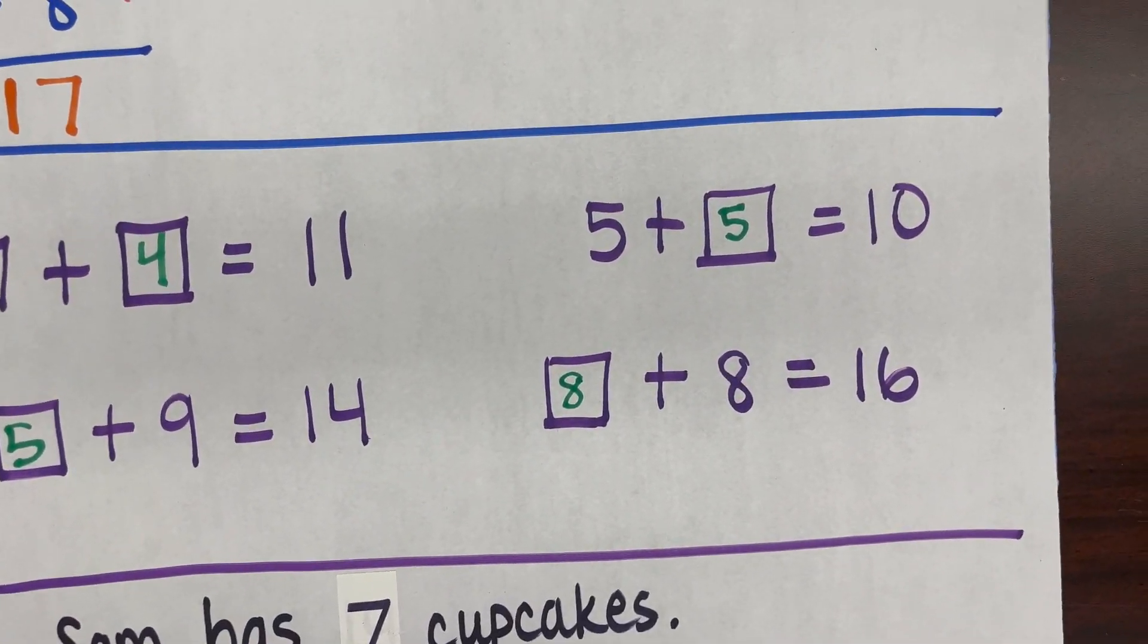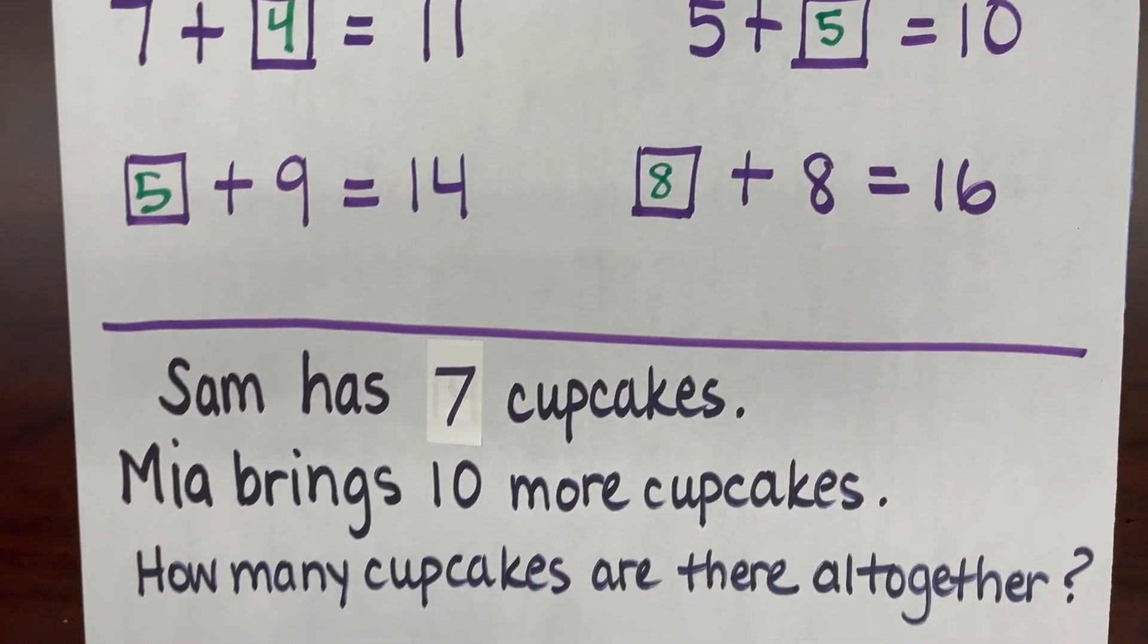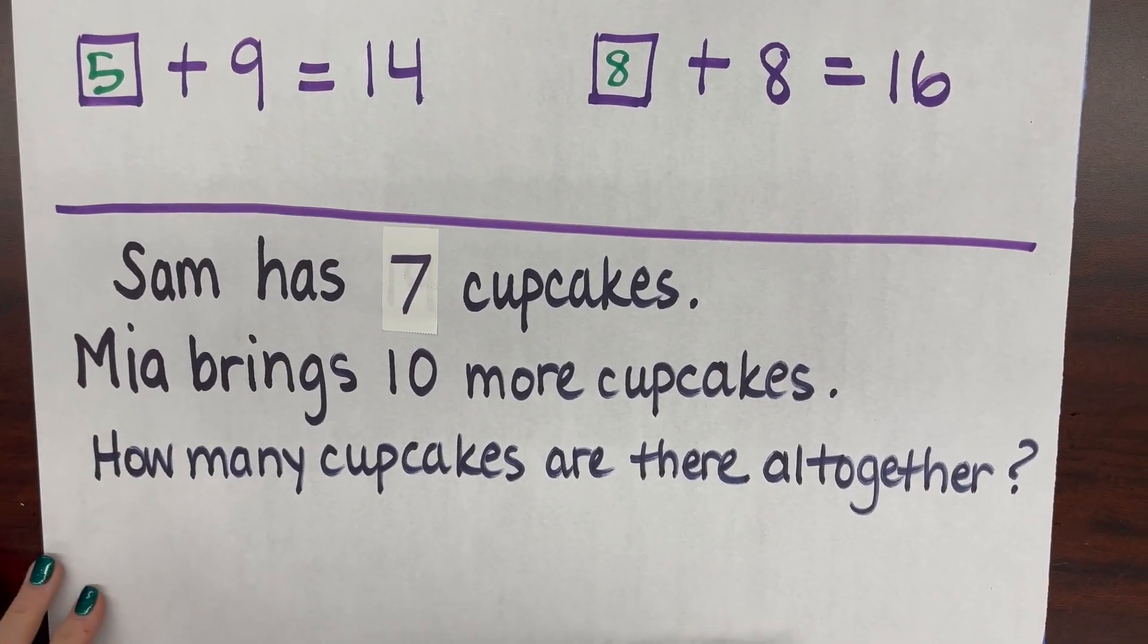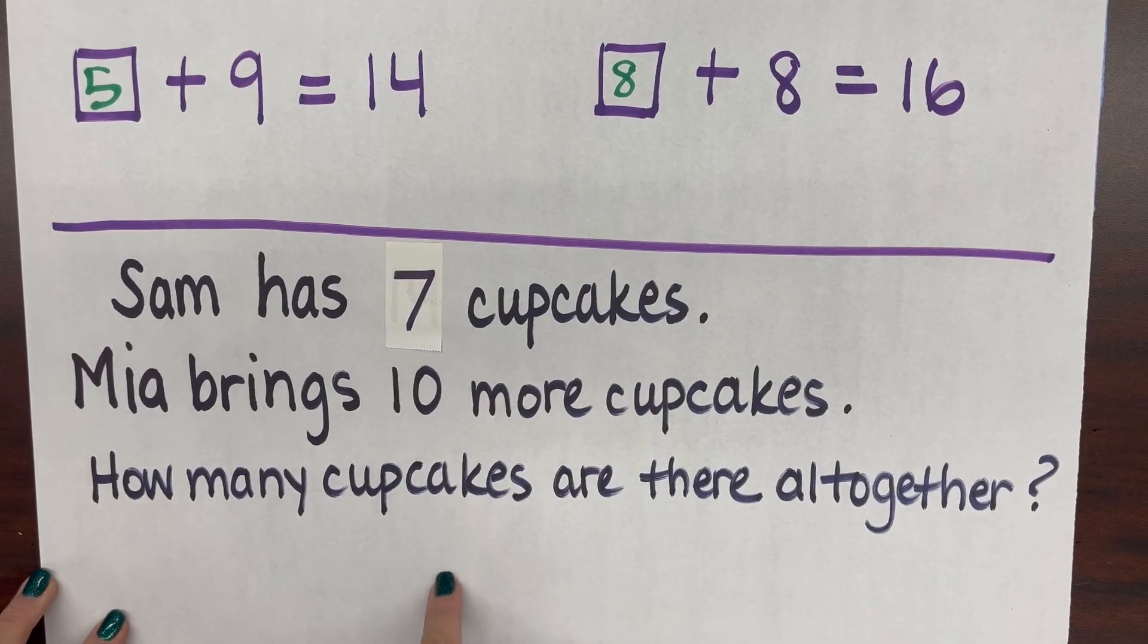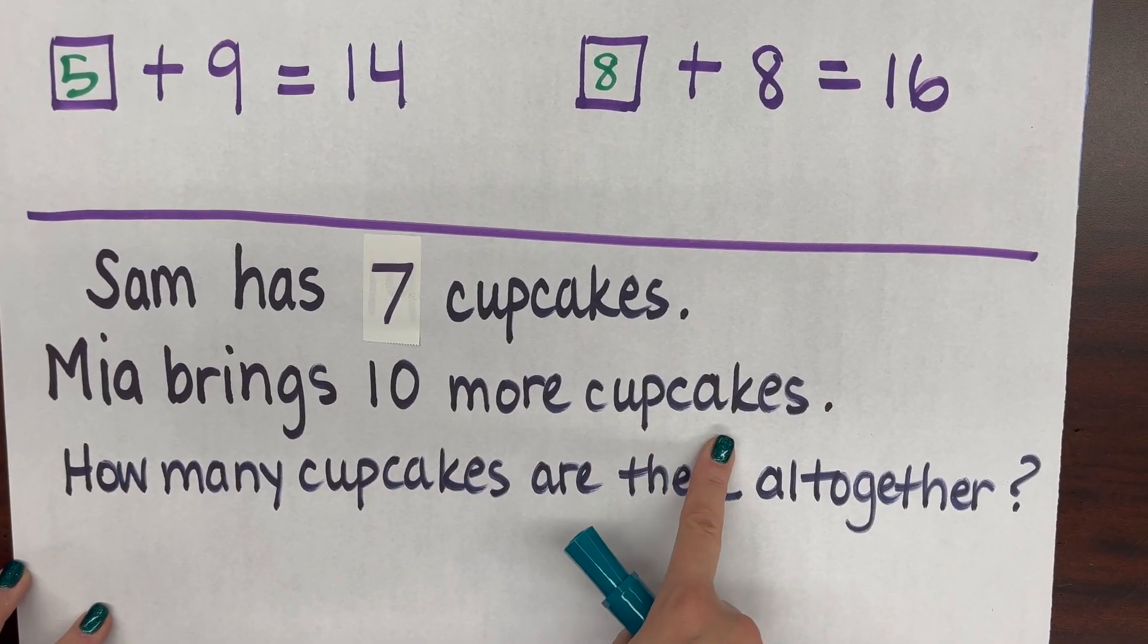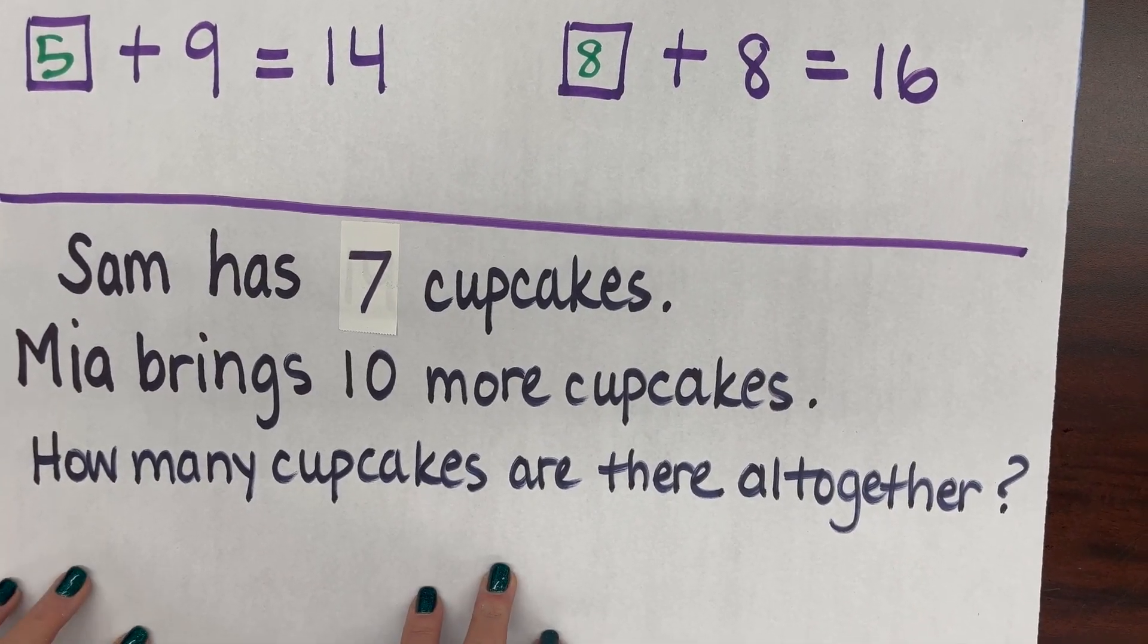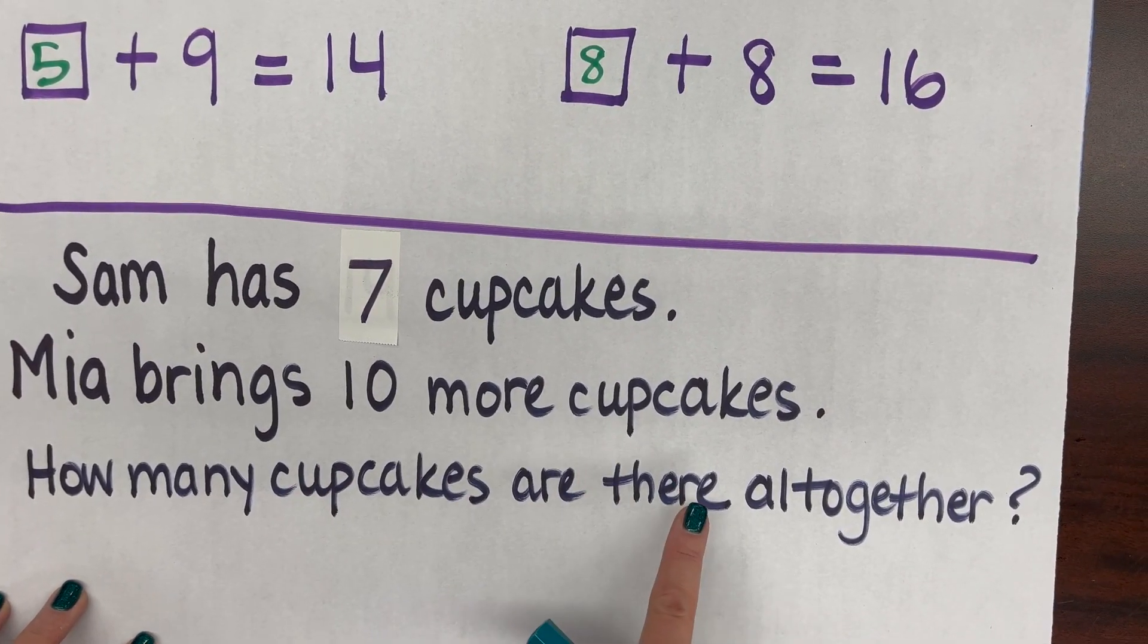The last little bit of review from first grade that second graders see at the beginning of the year is a story problem, so looking for the keywords to help solve. Sam has 7 cupcakes. Mia brings 10 more cupcakes. How many cupcakes are there all together?